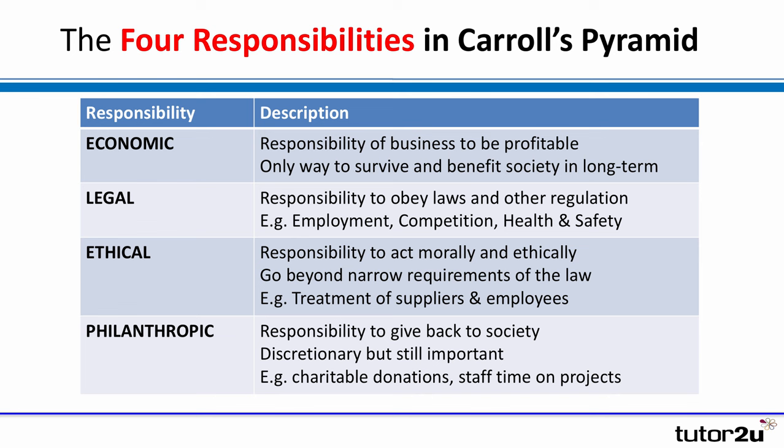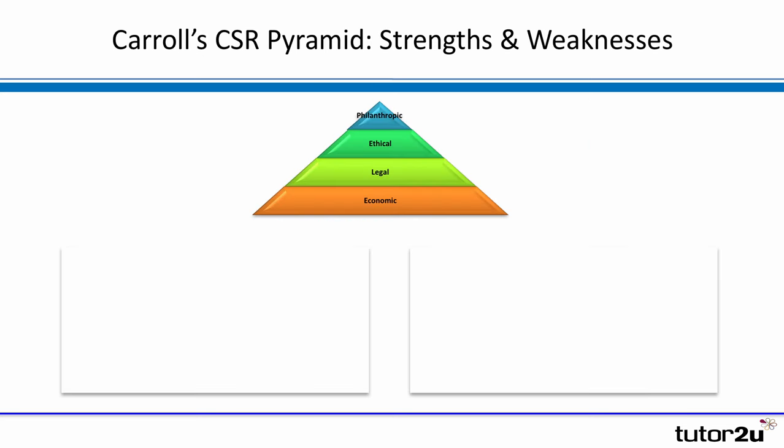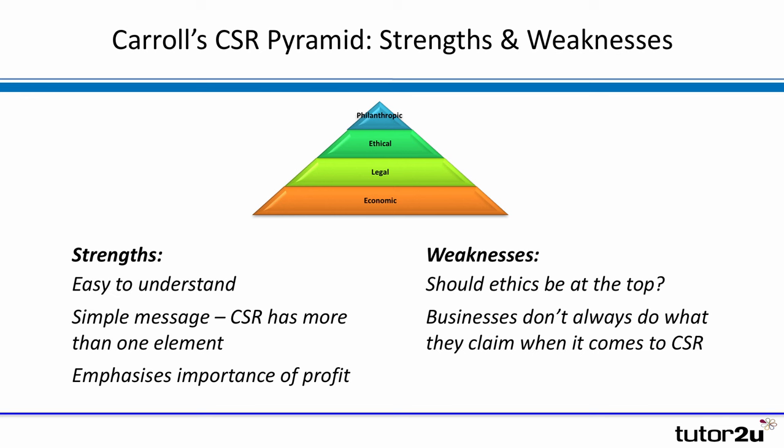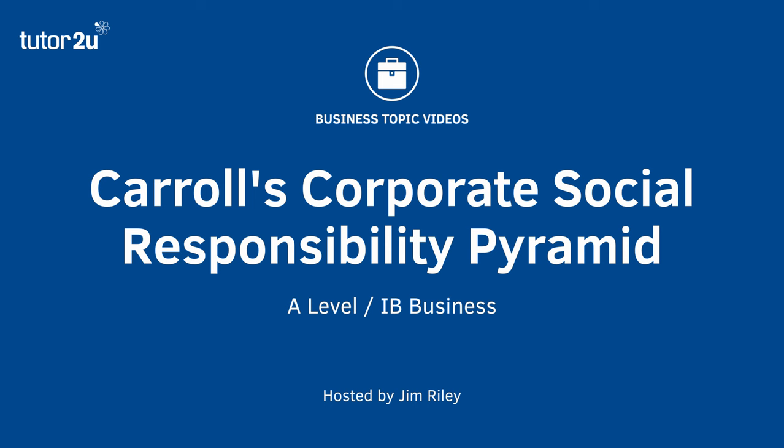So Carroll was saying that CSR has four levels, but the most important thing is you have to get the economics right first — you have to make a profit. It's a useful model, relatively easy to understand and apply, and importantly it emphasizes the importance of a business surviving and making profit in order to be able to do all the other stuff. It's just a framework, but a useful one to bring into any answers on CSR or corporate social responsibility.